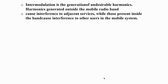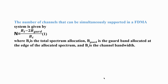The number of channels that can be supported in an FDMA system is given by: N = (BT − 2 × Bg) / Bc, where BT is the total spectral allocation, Bg is the guard band, and Bc is the total channel bandwidth. Guard bands are used to avoid interference between adjacent cells and between individual channels. Using this formula we can find how many channels can be supported by the FDMA system.